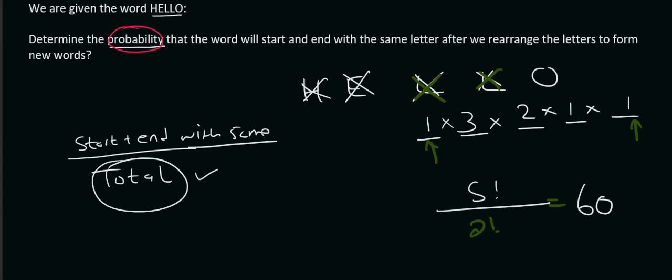So if you go ahead and you multiply that top part together, you end up with six. So there are six combinations that start and end with an L. And there are 60 combinations that you could make in total. Then if you go simplify that on the calculator, you would end up with one out of ten.